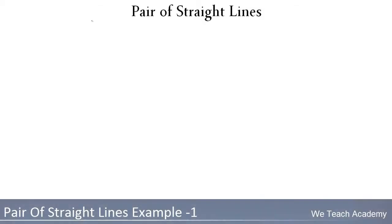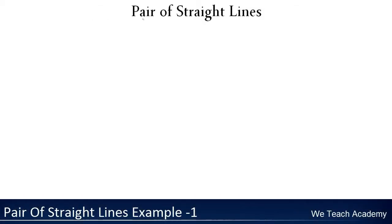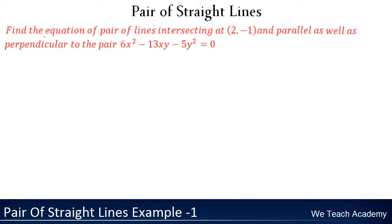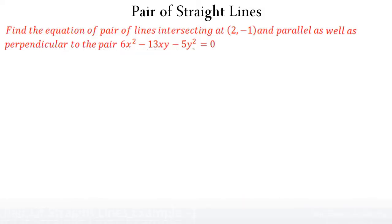Hello friends, welcome to 8th Academy. Here we are going to discuss an example under the concept of pair of straight lines. The given example is: we need to find the equation of pair of lines intersecting at (2, -1) and parallel as well as perpendicular to the given pair of lines 6x² - 13xy - 5y² = 0. Let us name this as equation 1.